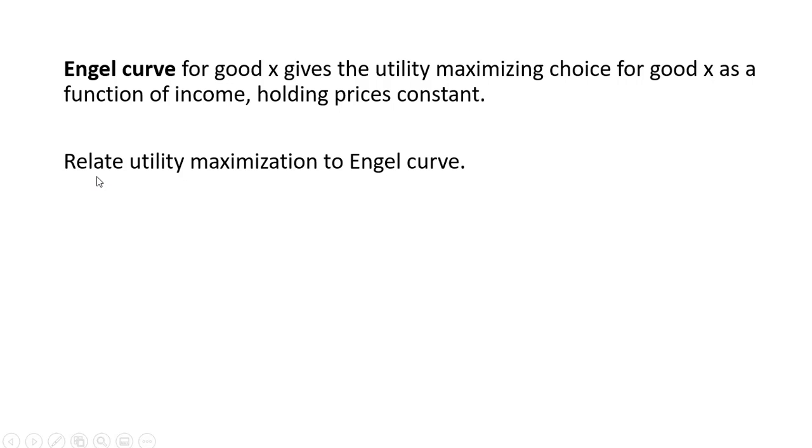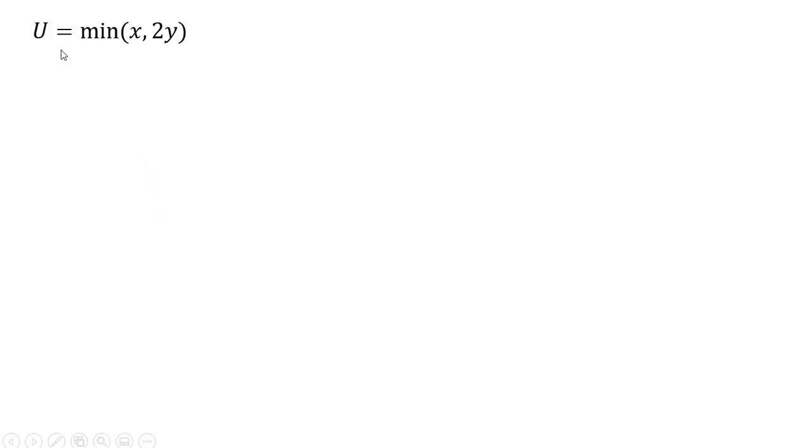And now what I'm going to do is relate utility maximization to the Engel curve. So here is our consumer's budget constraint. Consumer has income of $8, price of good x is $3, price of good y is $2. We're going to maximize utility.